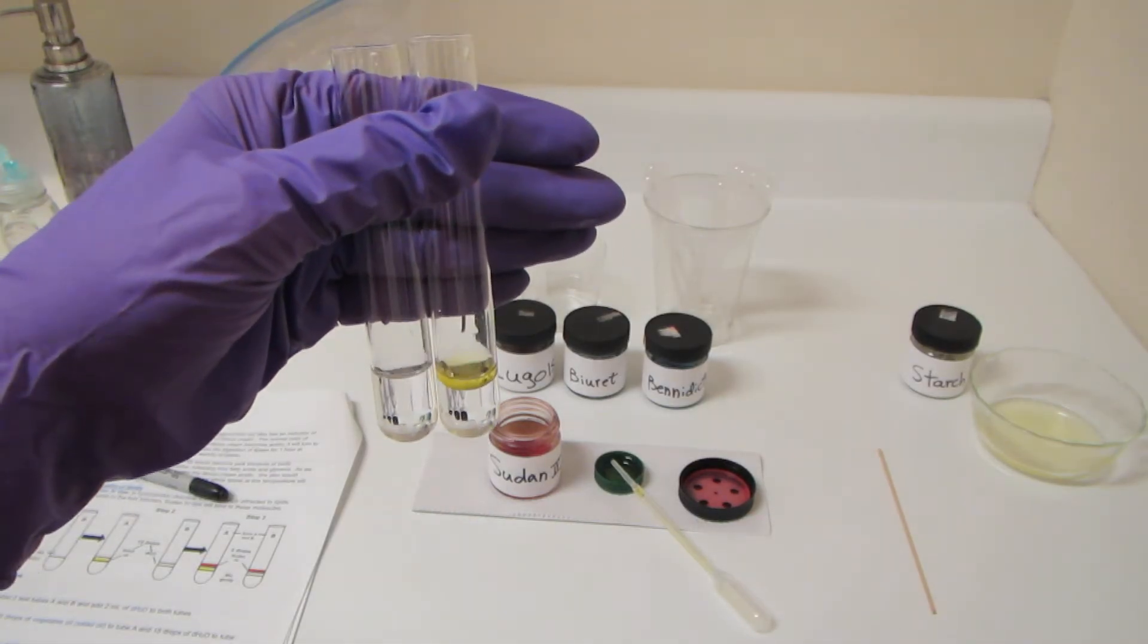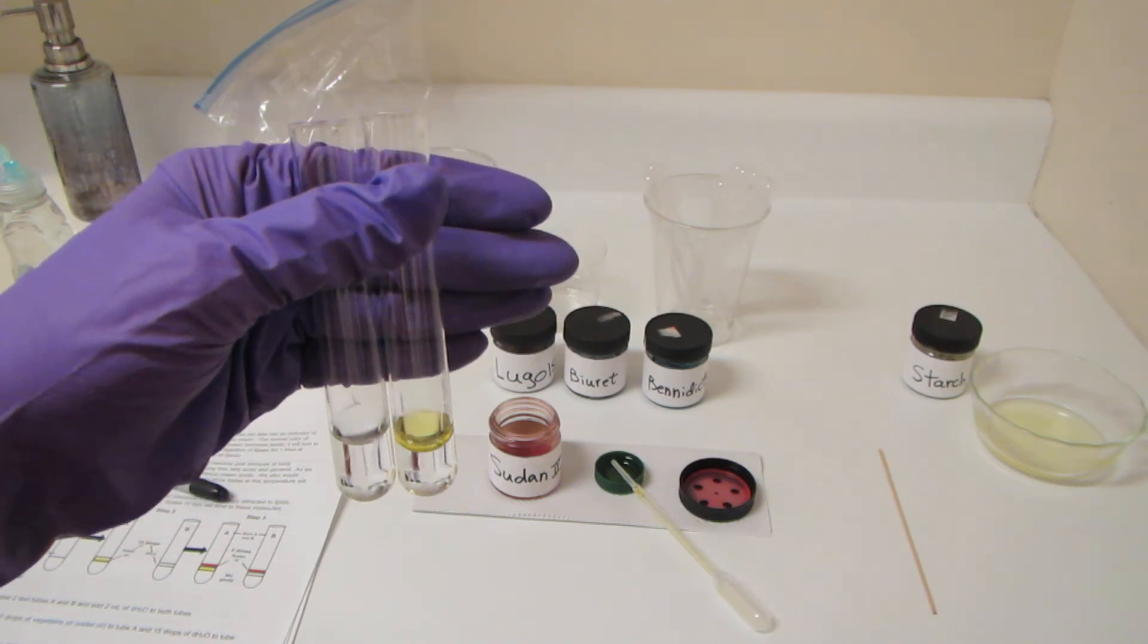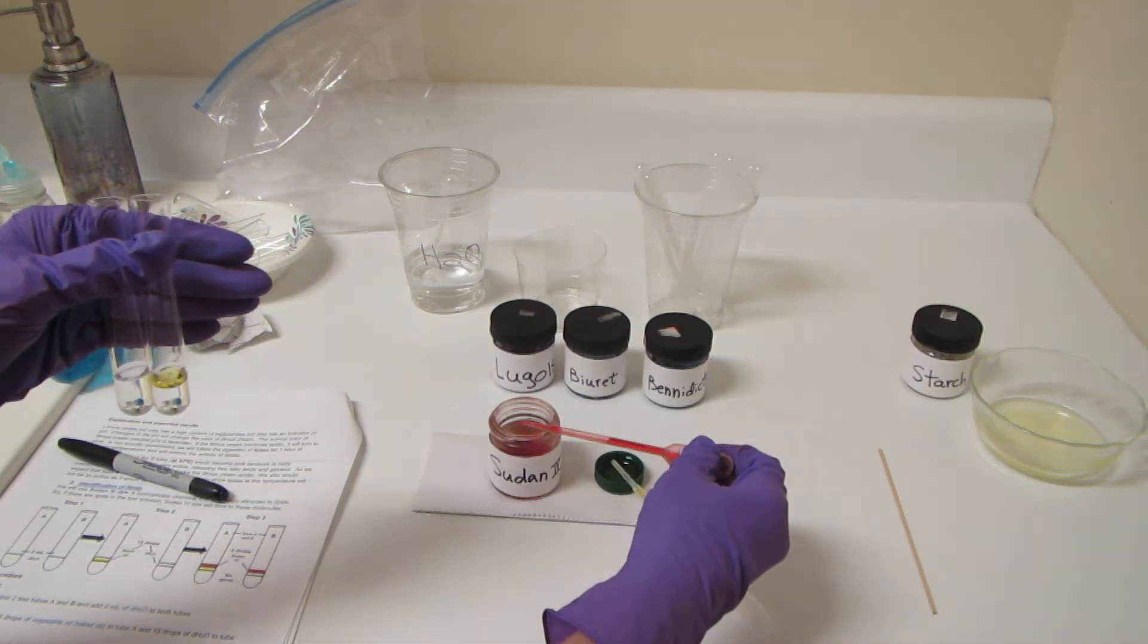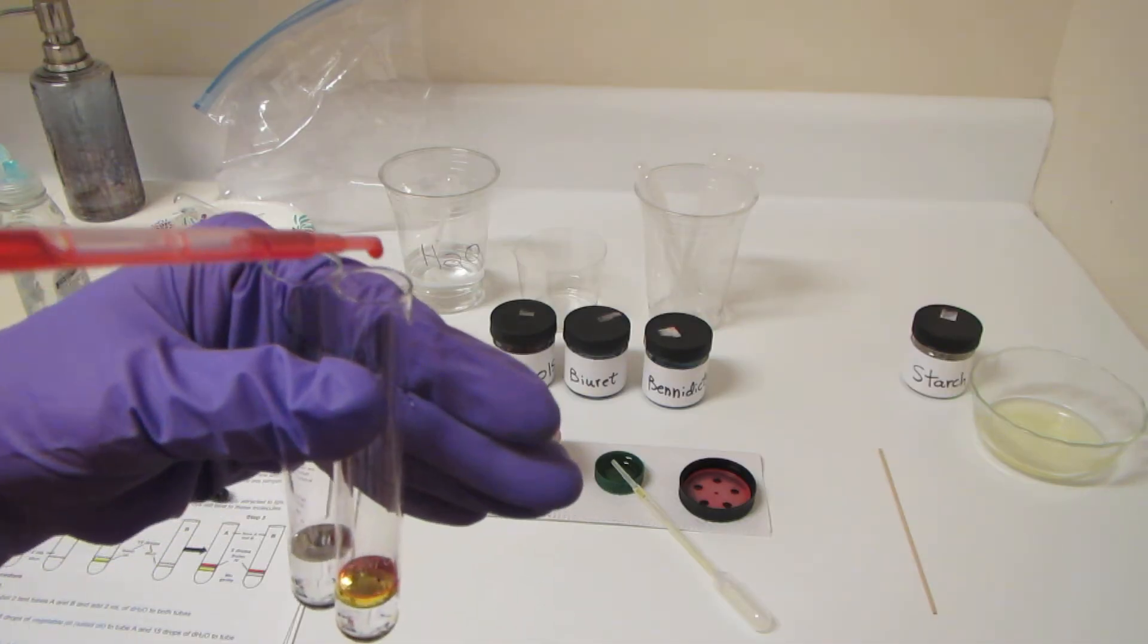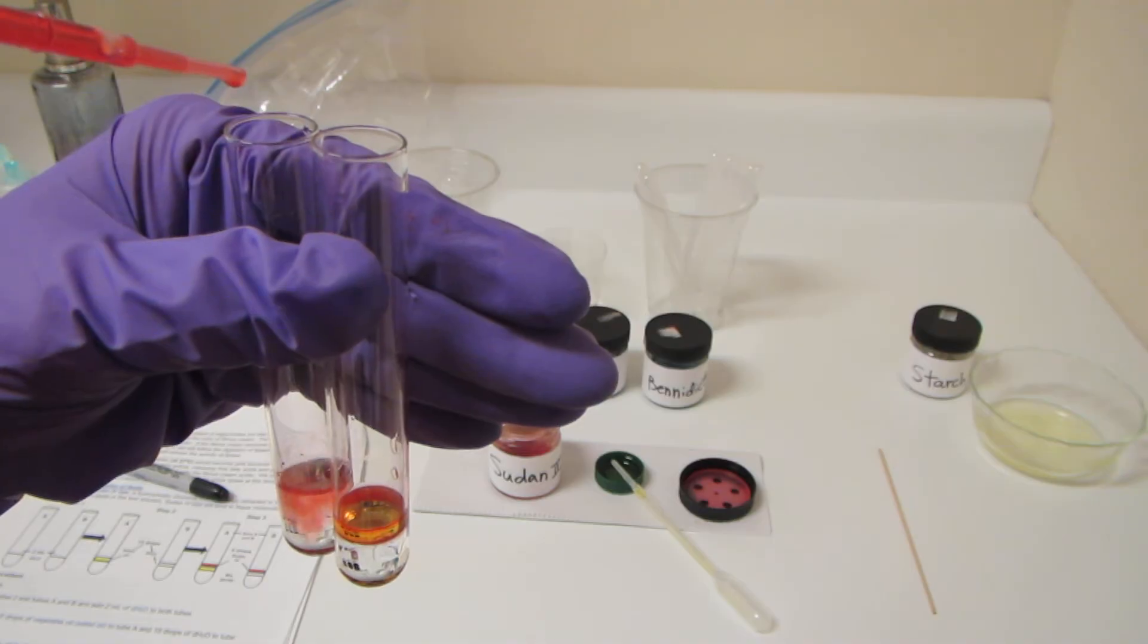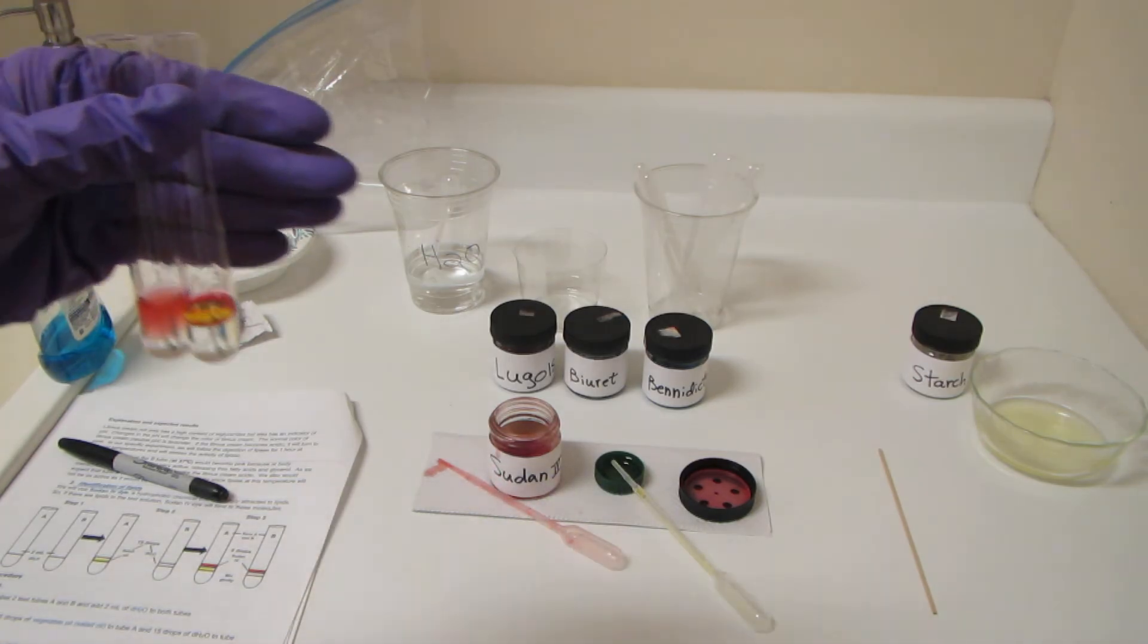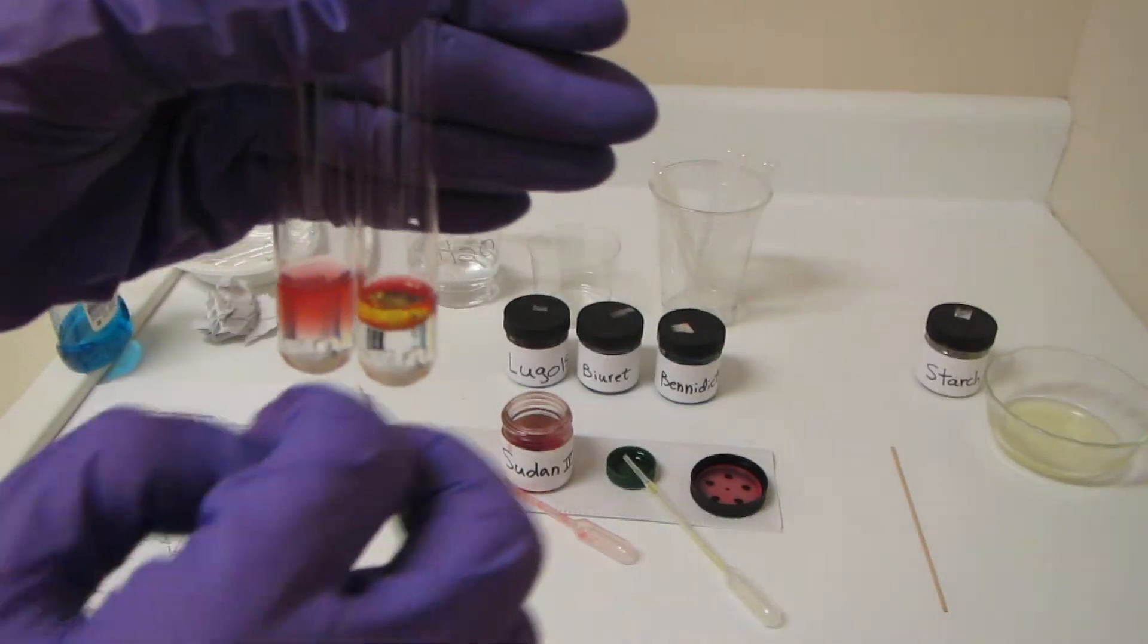So what I'm going to do next is take some Sudan 4 dye. I'm going to take five drops and put five drops into each of these test tubes. Trying very hard not to turn everything pink. Now what we're going to do is mix these up a little bit.